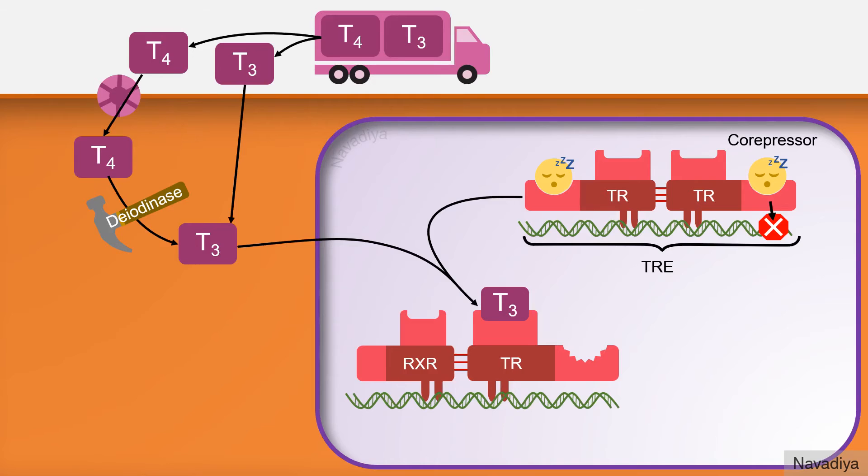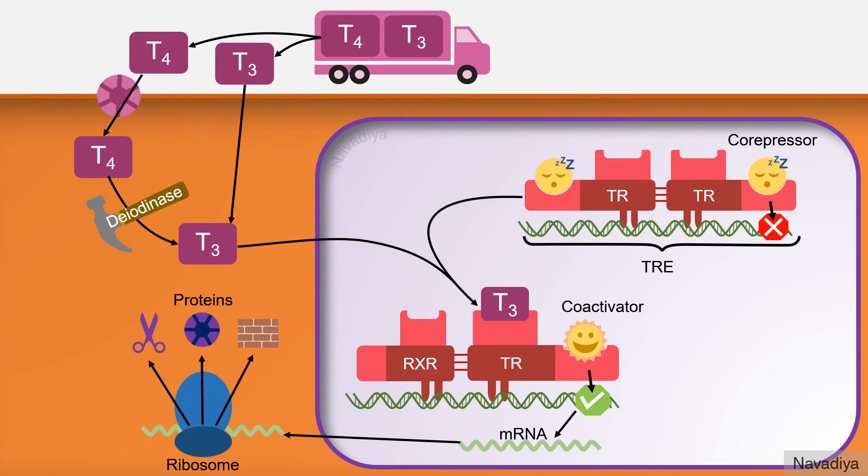The corepressor molecule is released and coactivator molecule binds here which induces the transcription of gene forming mRNA. The mRNA is transported into the cytoplasm where protein is synthesized from it.